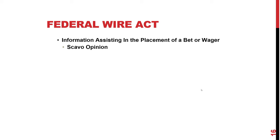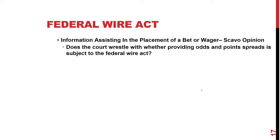For information assisting in the placement of a bet or wager, look at the Scavo opinion. Scavo was a person here in Nevada who would call his friend in Minnesota with sports wagering lines from various books in Las Vegas. That was deemed to be information assisting in the placement of a wager, whether or not a wager actually flowed from that information, because the information was integral to the operation of the book. Things like odds and point spreads — transmitting that information is deemed transmitting information assisting. Therefore Scavo was convicted under the Wire Act.